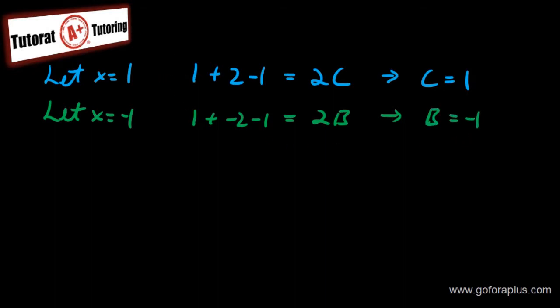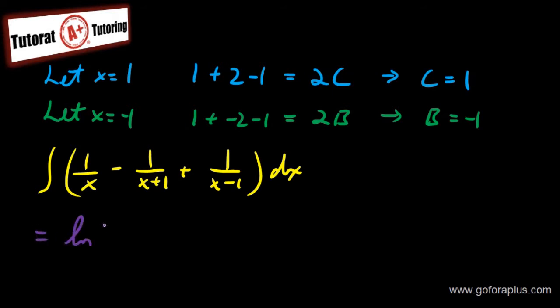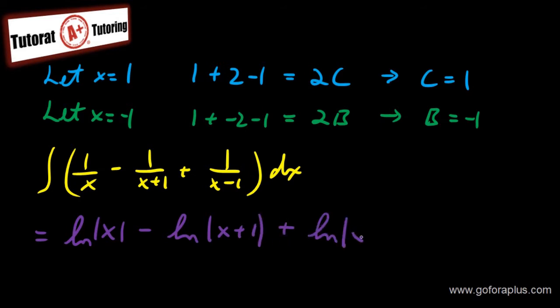Now that I have A, B, and C, my integral is 1 over x minus 1 over (x plus 1) plus 1 over (x minus 1), dx. The integral of each term, because the coefficient of x is all 1, is ln. So this is ln of x minus ln of (x plus 1) plus ln of (x minus 1) plus C.